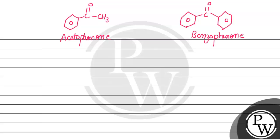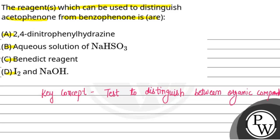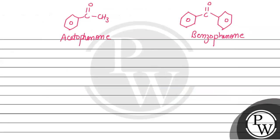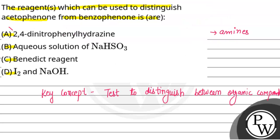Now, we have to determine which test we can use. If we consider option A, 2,4-dinitrophenylhydrazine, this test is used to distinguish amines, but we have ketone groups here. This means that option A is incorrect for us.